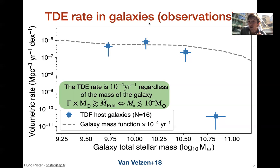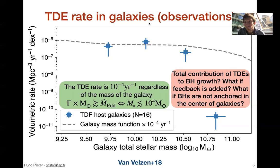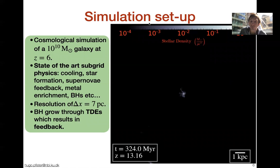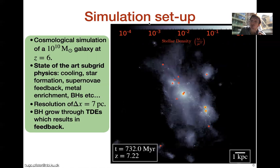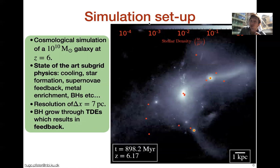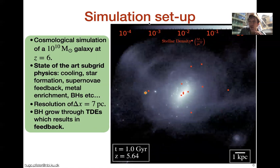There are a lot of drawbacks in this study: what is the total contribution to black hole growth, what if feedback is added, what if black holes are not in the center of a galaxy but are wandering? To address these questions you have to move to cosmological simulations. I'm showing here a state-of-the-art cosmological simulation of a galaxy building up its material — the red dots are different black holes. In this simulation we have a new sub-grid model that I developed to take into account tidal disruption events. Black holes surrounded by a yellow circle have a TDE rate larger than 10 to the minus 5 events per year.